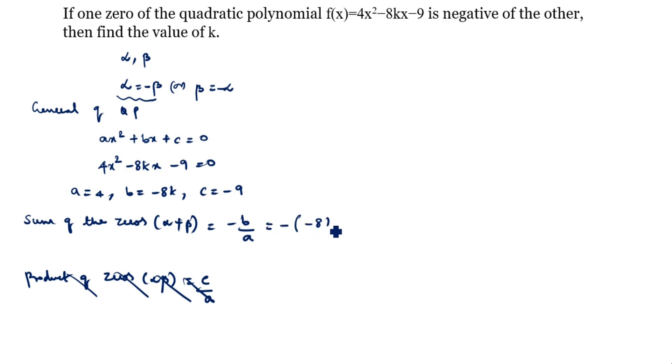Minus of b value is -8k divided by a which is 4. Two fours are 8, equal to +2k. α + β. What is the alpha value? α = -β. So -β + β = 2k.